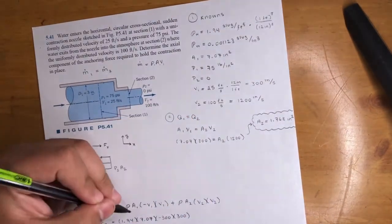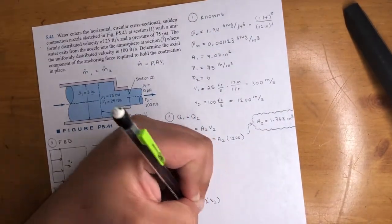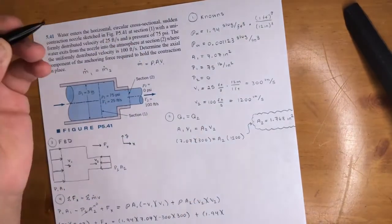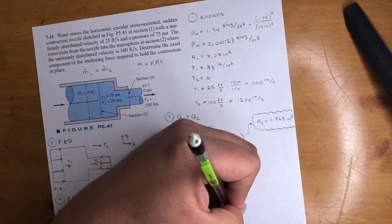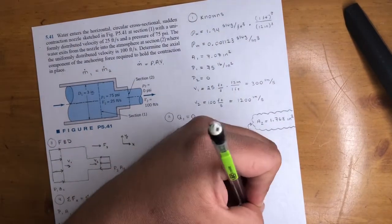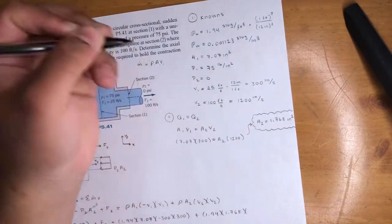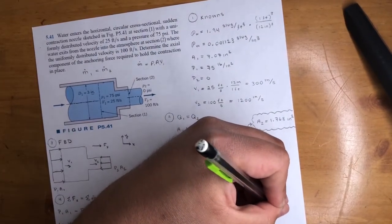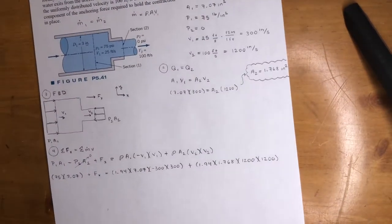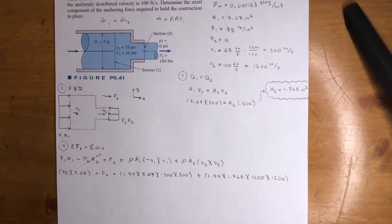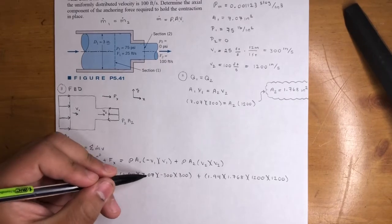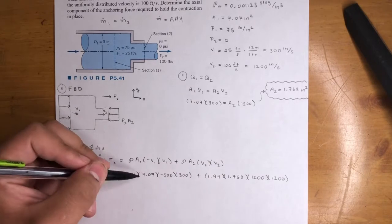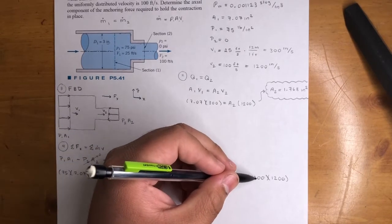So plus Fx is equal to 1.94 times area 7.07 times negative 300 times 300. So, that's this term. Now, we're doing the next term plus density, which is 1.94 times 1.768 times 1,200, 2 times 1,200.